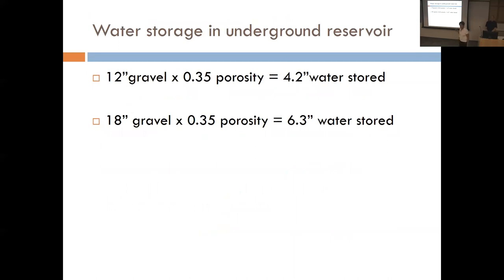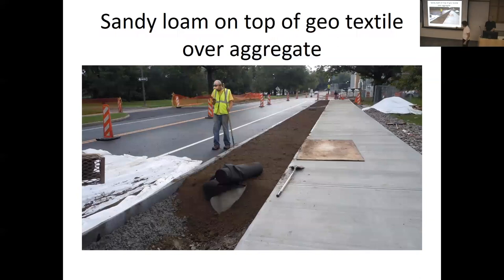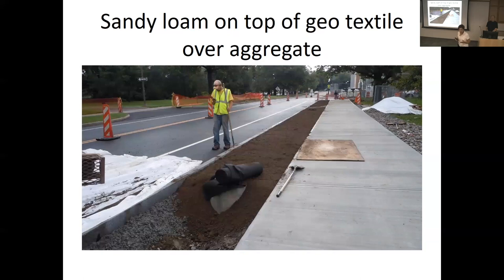12 inches of gravel at 35% porosity gives you about 4.2 inches of water stored. With 18 inches of aggregate you get up to 6.3 inches, so you have real capacity to store water without flooding. Then we added a design soil blended of sand, loam, and compost — a pretty sandy loam mix with about 8% organic matter by dry weight, trying to balance infiltration and plant growth support.